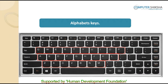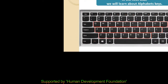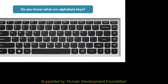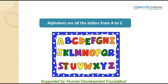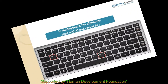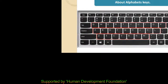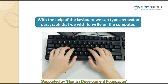The keyboard has keys for alphabets, symbols, arrow keys, and function keys. Do all of you know what alphabets are? Alphabets are all the letters from A to Z, but on the keyboard, the alphabets start with Q and end at M. With the help of the keyboard, we can write or type any text or paragraph that we wish to write on the computer.